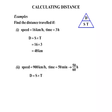So distance equals speed times time, where the speed is 900 km an hour and the time is 50/60th of an hour. So 900 times 50 over 60 works out to be 750 km. Terrific.